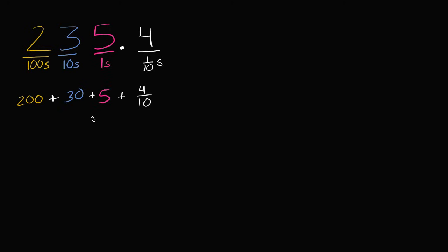So this is a super important idea in mathematics — I can now use place values to represent fractions. This point four is four tenths. Another way to write this number: I could write it as 235 and four tenths, as a mixed number. So this up here would be a decimal representation, 235.4, and this would be a mixed number representation, 235 and four tenths. But they all represent 200 plus 30 plus five plus four tenths.